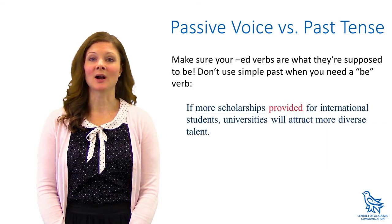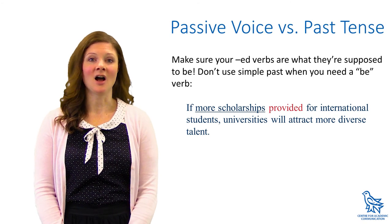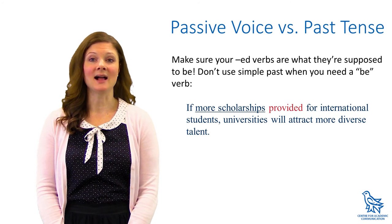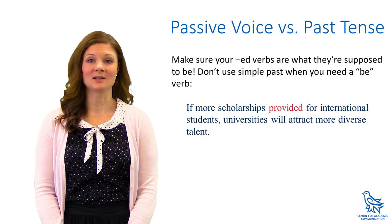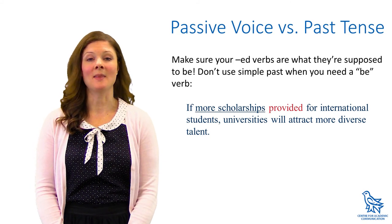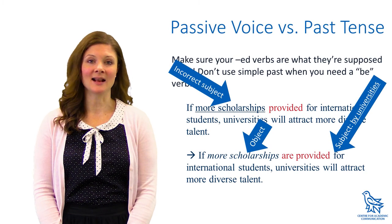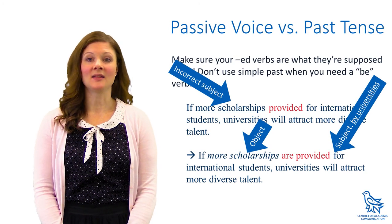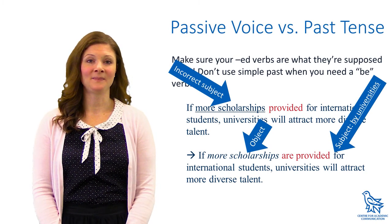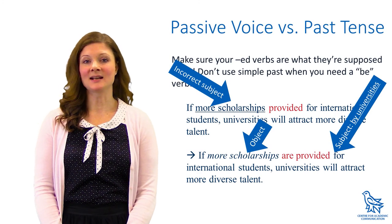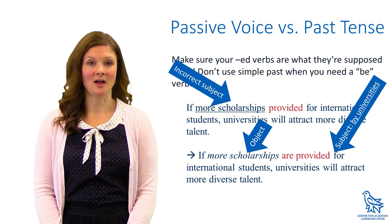You can also edit your work by checking all the verbs that end in -ED. A common error is to use a simple past tense verb without a be verb when you meant to use the present tense and the passive voice. In the example, it's not the scholarships that are providing something — they're the subject when they should be the object of the sentence. In the corrected version, the subject is missing, but it's clear that "scholarships" is the object, not the subject.